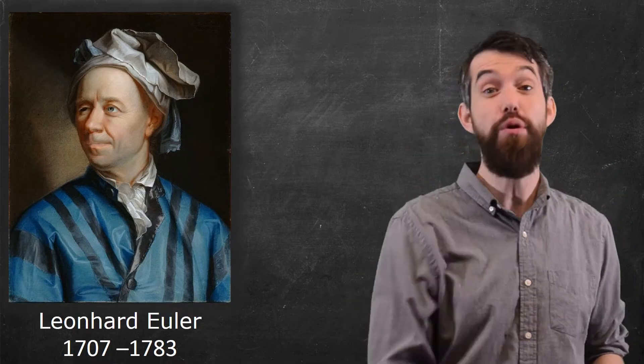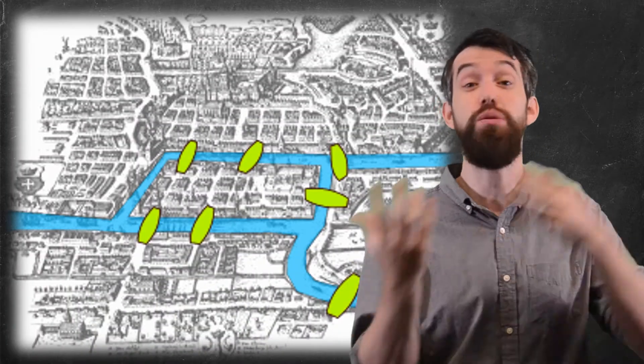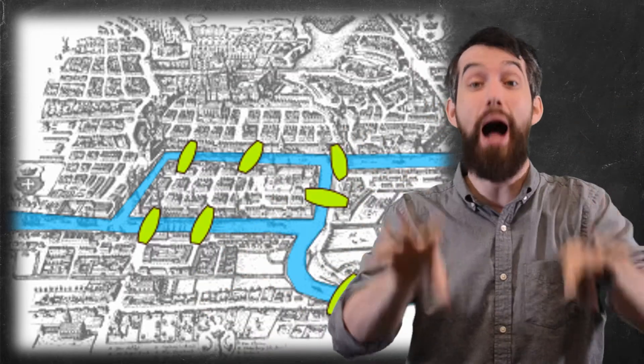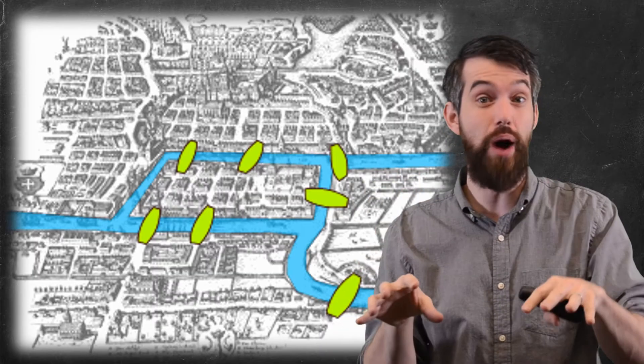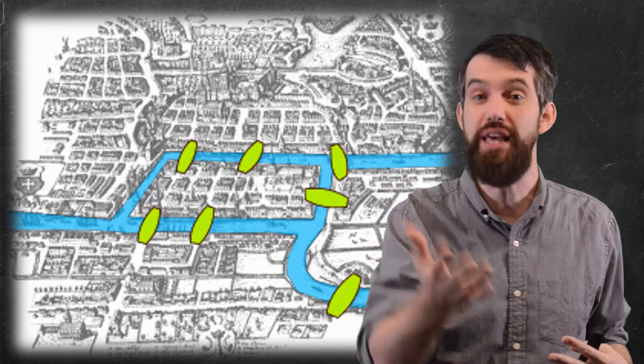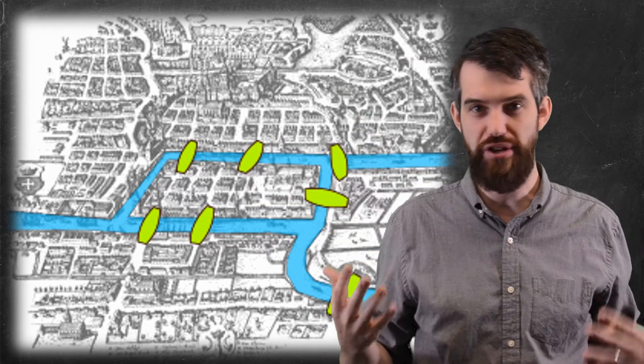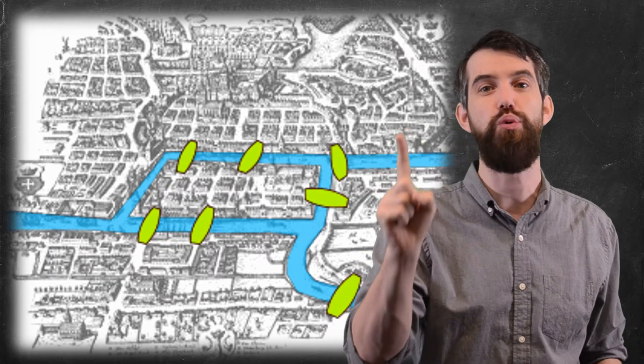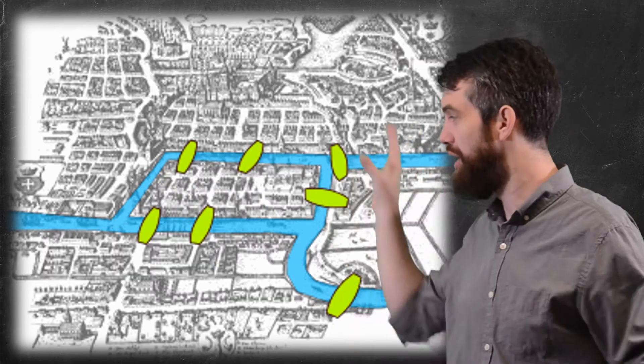The problem that initially motivated him was this. There is a place in Königsberg, in ancient Prussia, and in that city there is a river, and on that river there are two islands. And connecting the mainland on both sides and the two islands, there were seven different bridges. So the question Euler had was this: Is it possible that you can walk through this configuration of islands and bridges in some way where you walk across every single bridge once? Not twice, not zero times, exactly once for every single bridge.